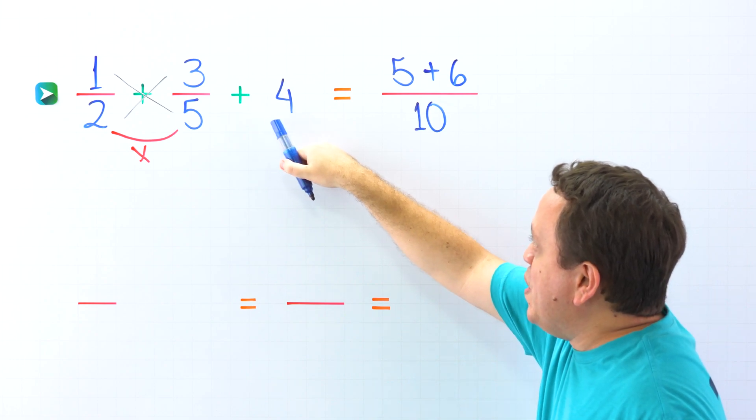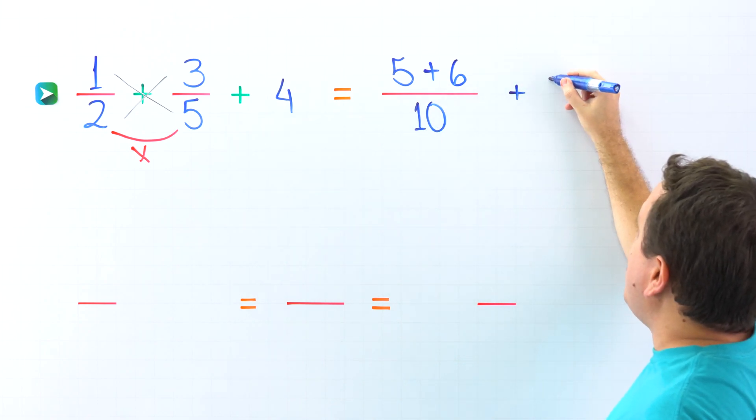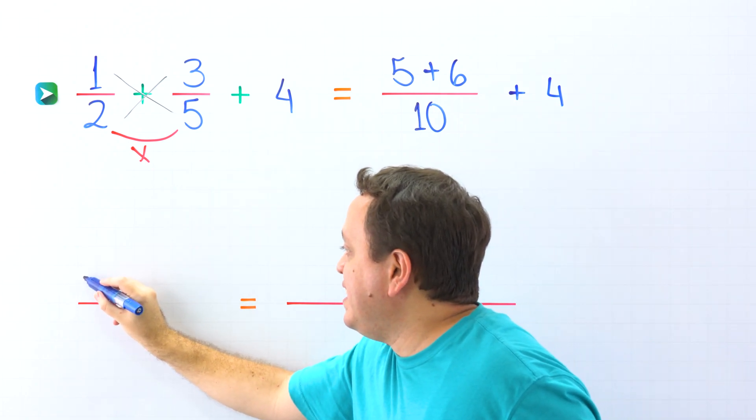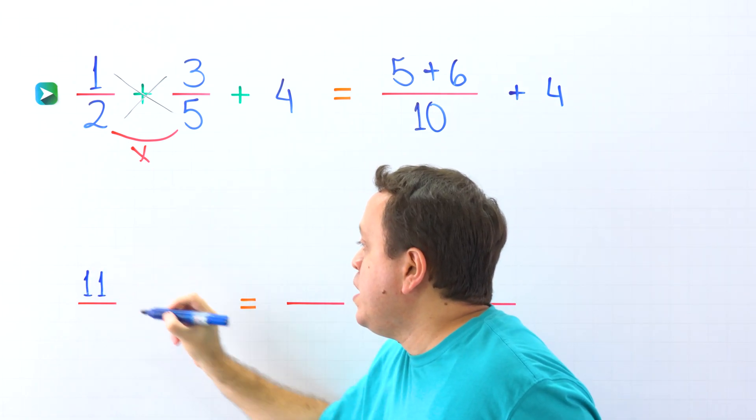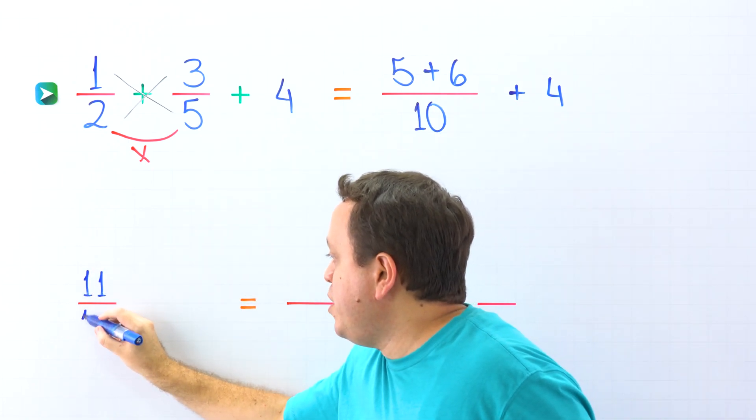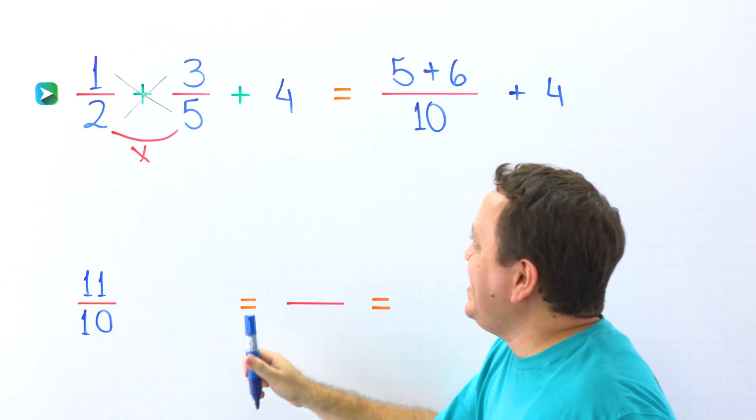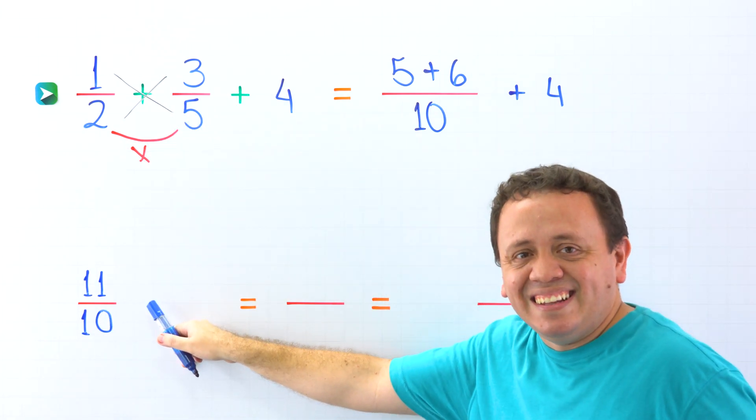Don't forget to add the whole number. So, plus 4 over here. 5 plus 6 give us 11. And then we put 10 over here in the denominator. That's it! 1 half plus 3 fifths is 11 tenths.